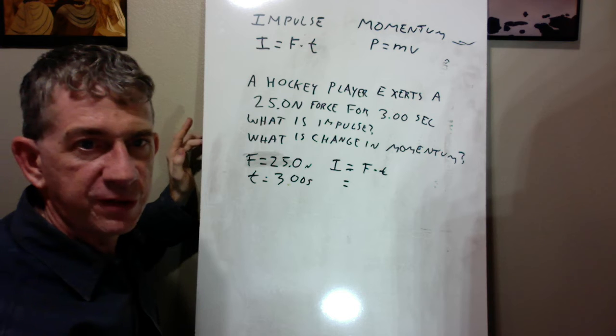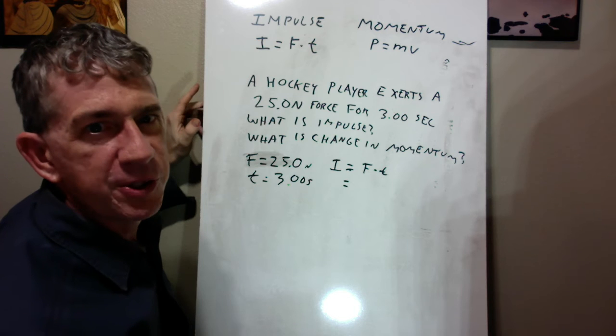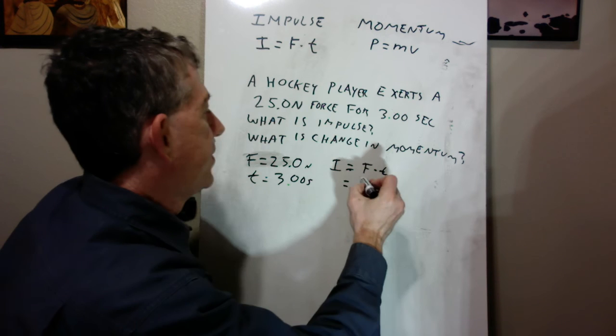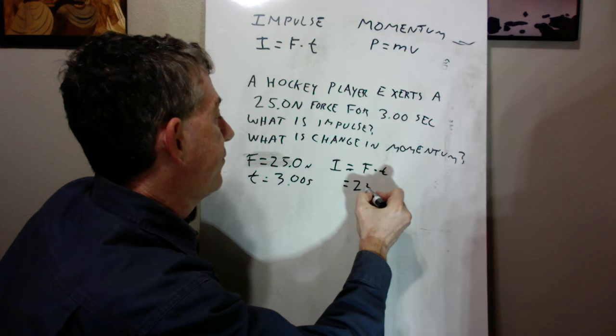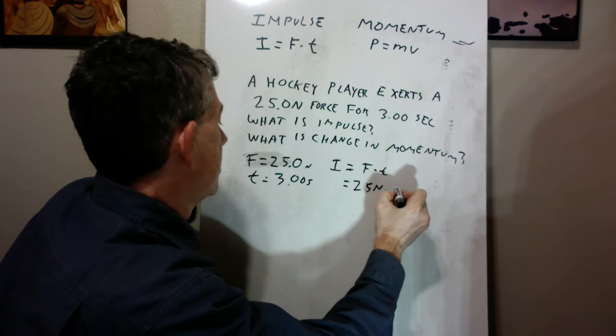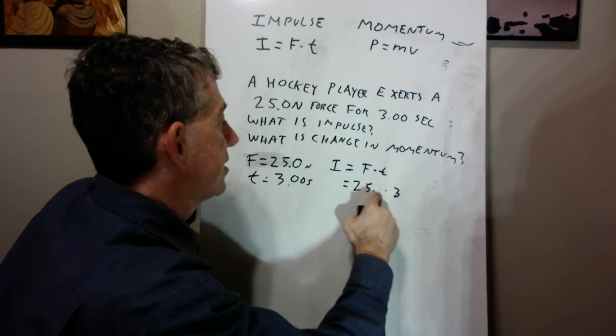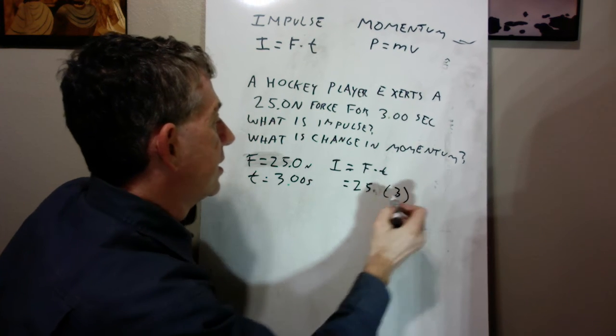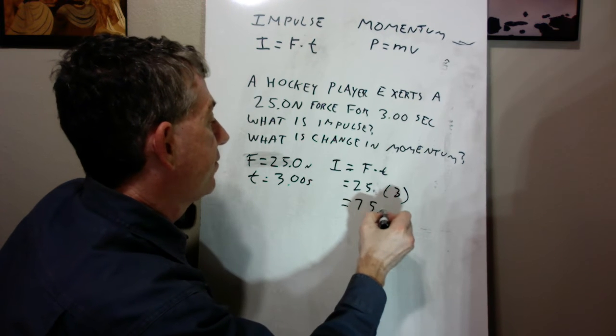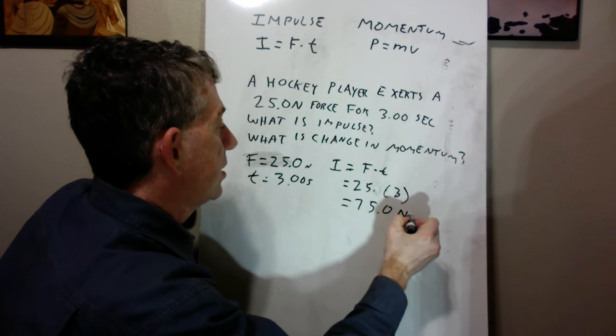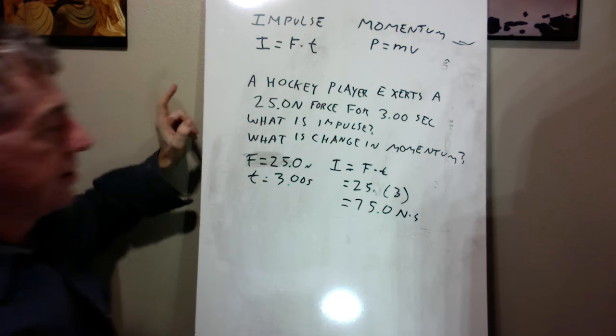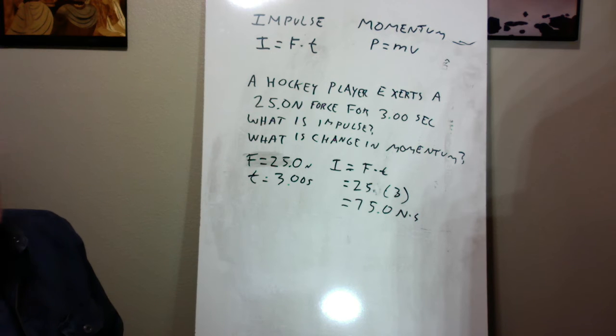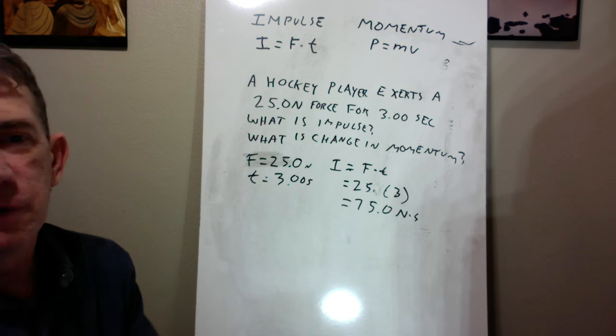So the impulse is equal to the force times time. So very easy to do. And, substitute, if you need to pause the video, please do that. And it would be 25 Newtons times three seconds. Or 75 Newton seconds. So that's the answer to that. Very easy, very straightforward.